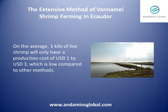On average, one kilo of live shrimp will only have a production cost of one to three U.S. dollars, which is low compared to other methods.